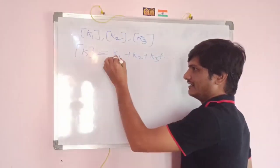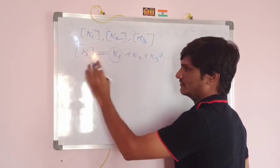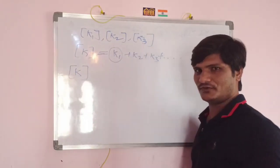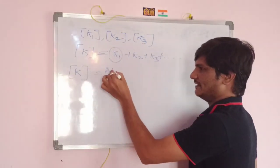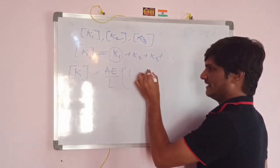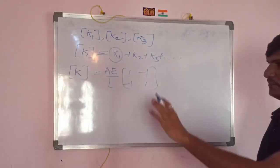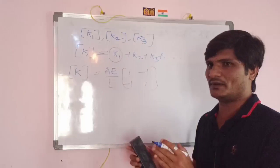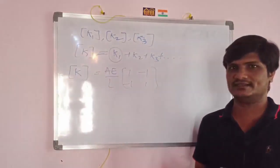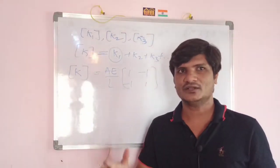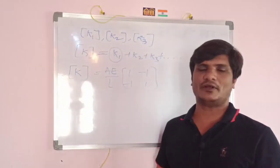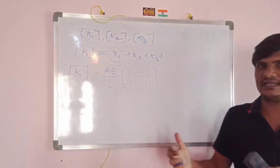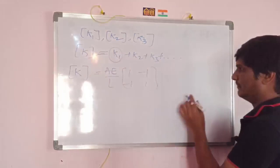The values k1, k2, k3 depend on the type of element. For a bar element, the stiffness matrix is AE/L times [1, -1; -1, 1]. I am taking the general method to show how to assemble the global stiffness matrix. This method is the same whether it is a bar problem, beam problem, or truss problem.